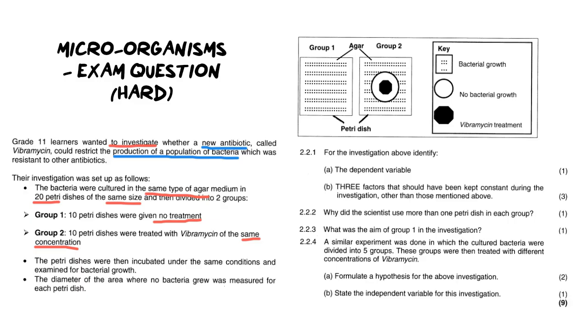And then it goes on to say that the petri dish was then incubated under the same conditions and examined for bacterial growth. The diameter of the area where no bacteria grew was measured for each petri dish. They're also telling us how they measured the effectiveness of the antibiotic. Now let's take a look at the questions and see how we should appropriately answer them to get full marks.